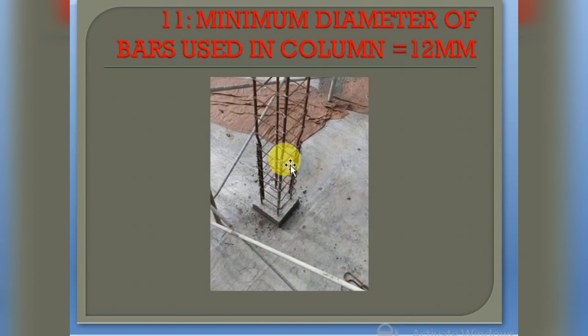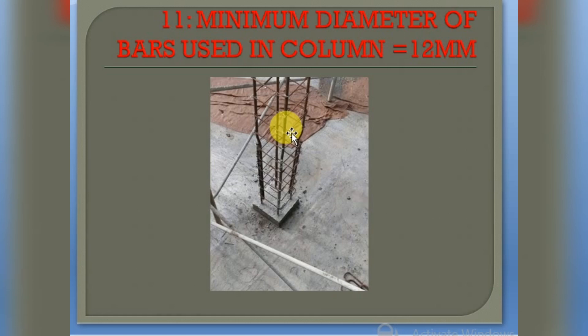The next point is the minimum diameter of bars used in a column, which should be 12 mm. Here I have shown you the column reinforcement — the longitudinal bars should be at least 12 mm. We cannot provide bars of 6 mm, 8 mm, or 10 mm in columns. We can provide more than 12 mm, such as 16 mm — it depends upon the structure.